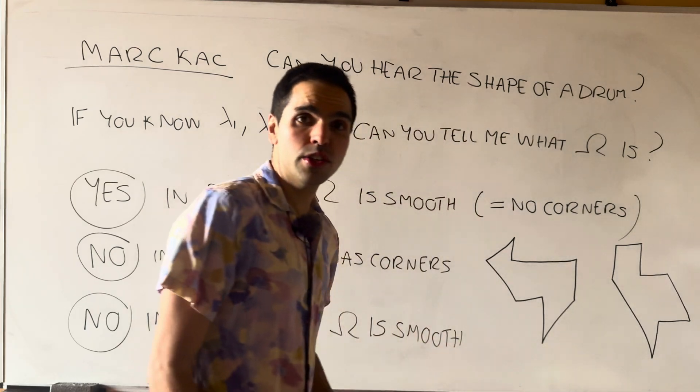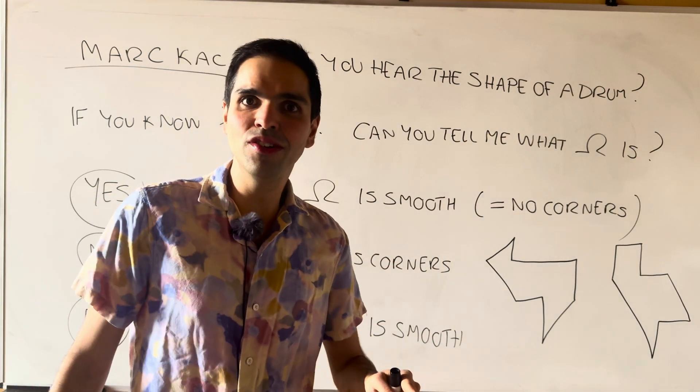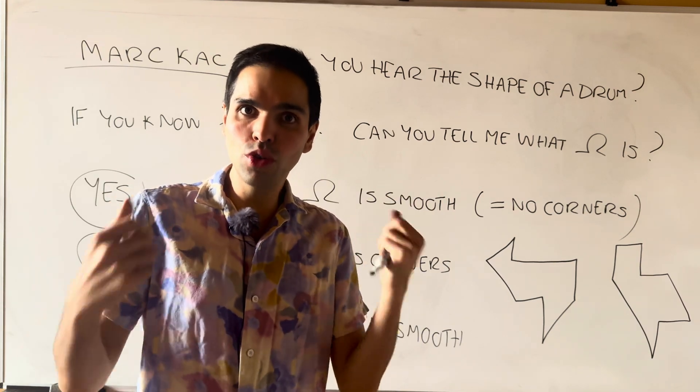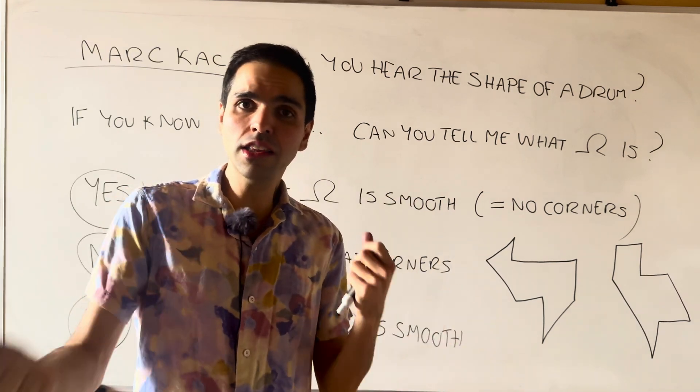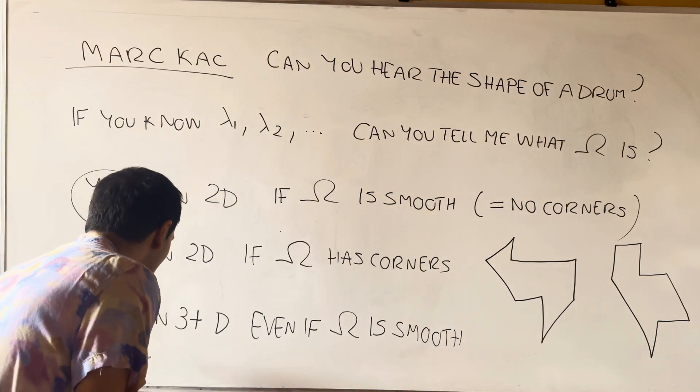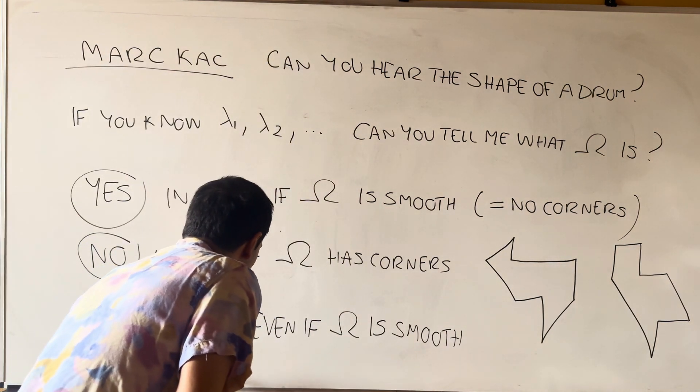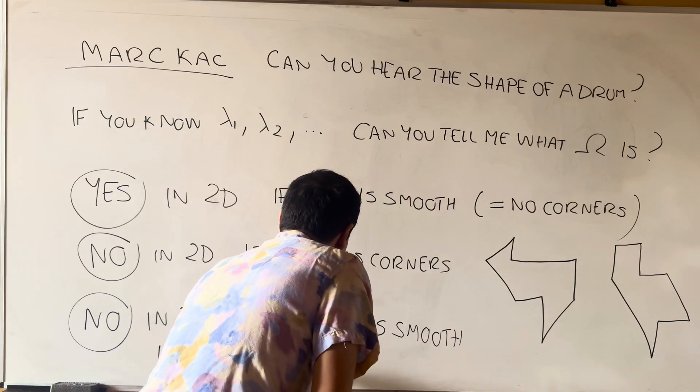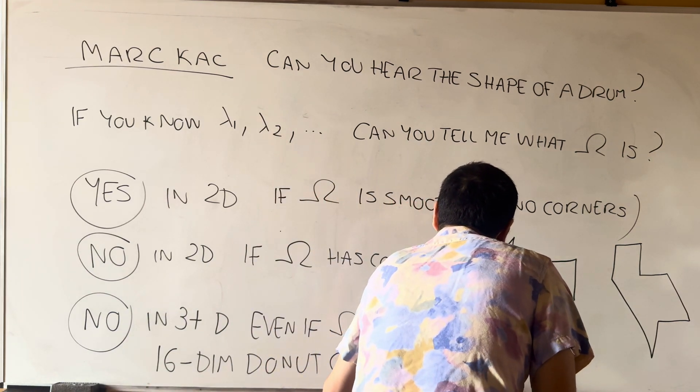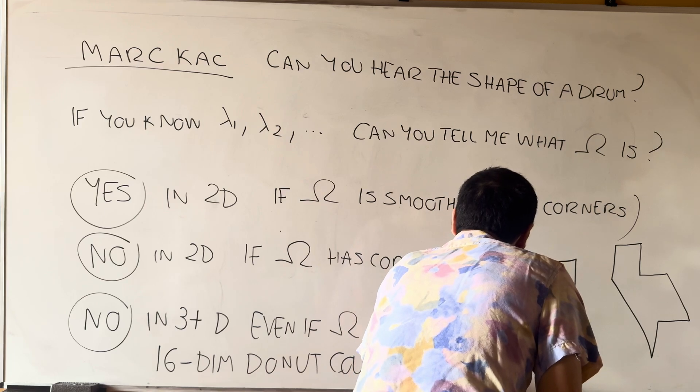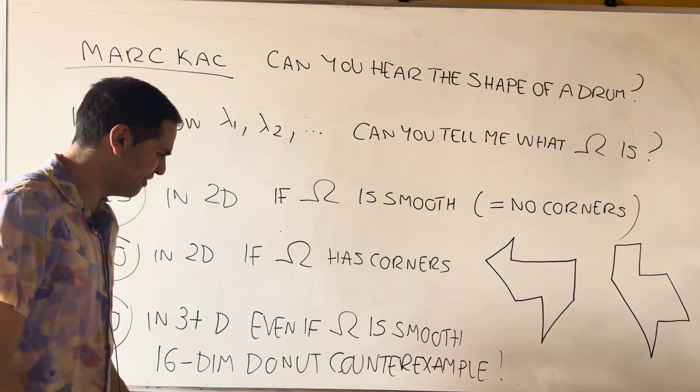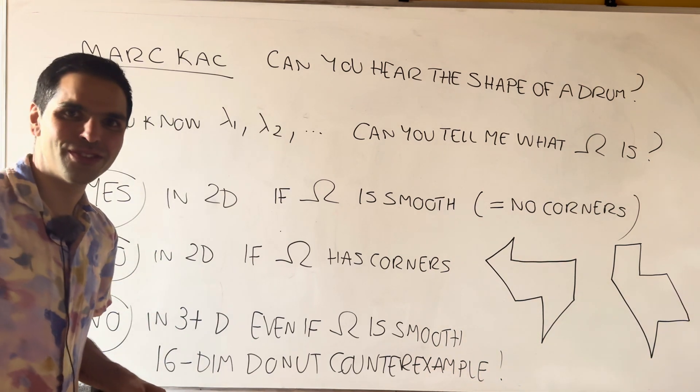Because it turns out there are I kid you not two 16 dimensional donuts that are not the same but that make the same sounds. So 16 dimensional donut or torus counter example. Can you imagine you have to go to 16th dimension to find a counter example? But I think that is super super cool.